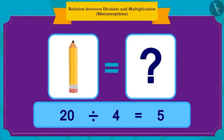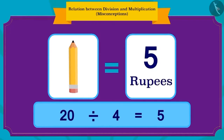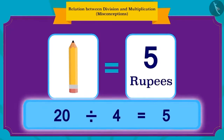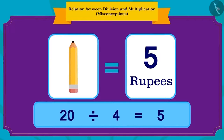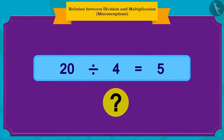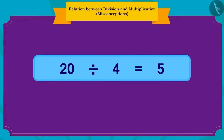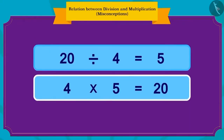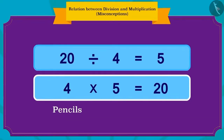Raju and Babalu will need to pay five rupees for one pencil. We can find this answer with division: 20 divided by 4 equals 5. How can we write this in terms of multiplication? Four pencils and each pencil costs five rupees, so the total is 20 rupees — four multiplied by five equals 20.